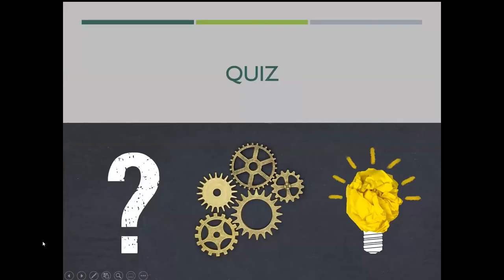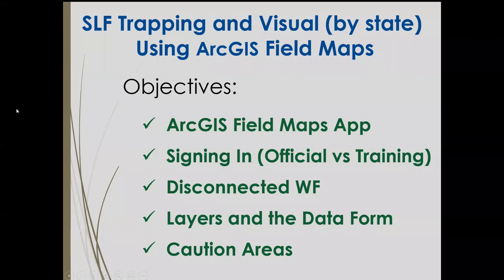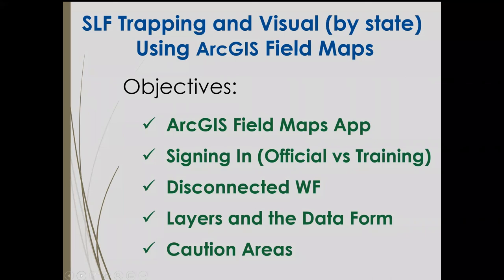Don't forget to take the quiz — it might have felt like a bit of an information fire hydrant, but use it to review and make sure you walked away with the main points. We covered the ArcGIS Field Maps app, signing into the two different portals (official versus training), the disconnected workflow, the three layers present (the two editable ones and site plans which is not editable here), and the caution areas.